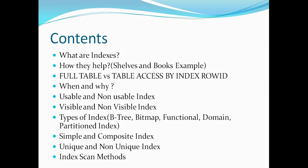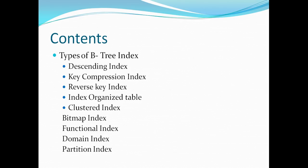We also have unique and non-unique indexes, and certain scanning methods used by indexes called index scan methods. B-tree indexes can be further categorized into descending index, key compression index, reverse key index, index organized table, clustered and non-clustered index, and then we have bitmap index, functional index, domain index, and partition index.